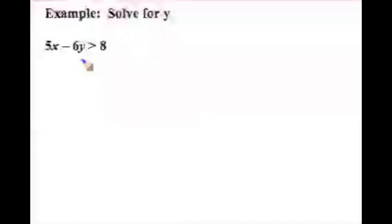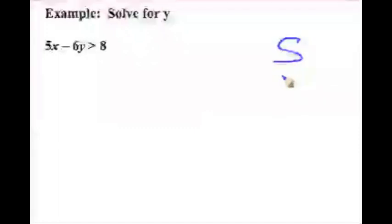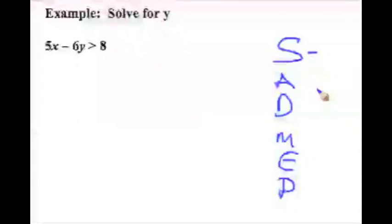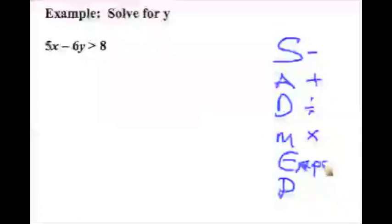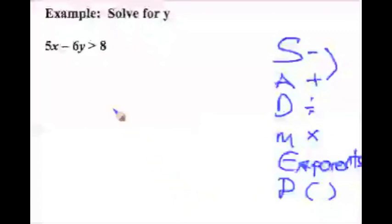Let's take a look at our first example. We're solving for y, which means we're getting y by itself — this letter on one side, everything else gone. To do that, we go through a series of steps, undoing operations in SAD-MAP order. S stands for subtraction, A for addition, D for division, M for multiplication, E for exponents, and P for parentheses. So first we look for any subtraction or addition terms we can get rid of by subtracting or adding.